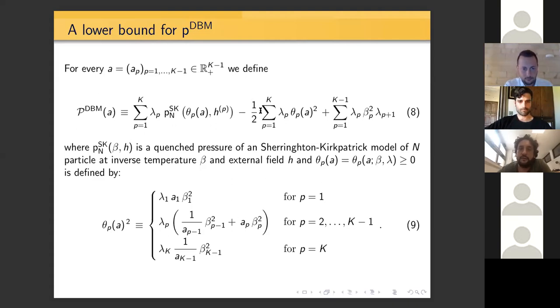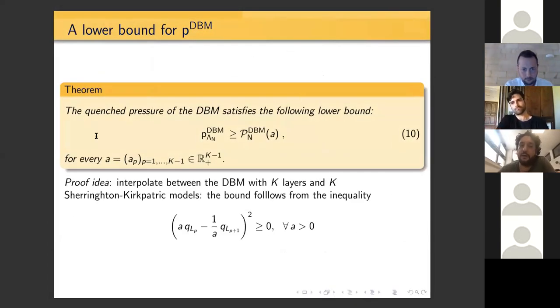What is the point in defining this object? It's that actually you can prove that this object, for any choice of your a free parameter, gives a lower bound for the pressure of the deep Boltzmann machine. Just an idea of how to prove this inequality: you do an interpolation between your model, the deep Boltzmann machine with K layers, and then you take K independent Sherrington-Kirkpatrick models. Then you do interpolation and you can control the derivative, observing that this object is always positive. Clearly you have to play a little bit with constants, but it's not hard to show this inequality. This basically is the starting point of the work, because the idea is that we have a good control of what happens to the pressure of the SK model, so we can control the left-hand side by controlling the right-hand side.